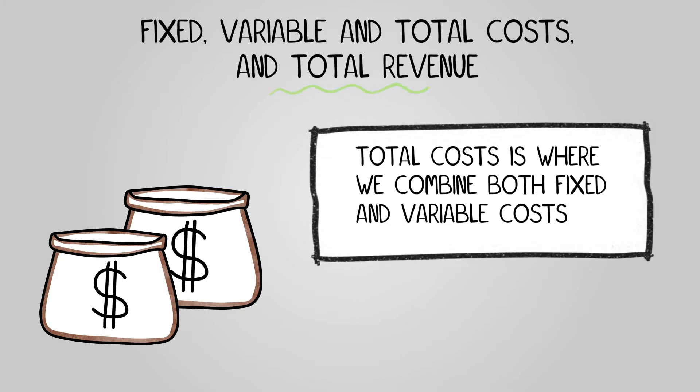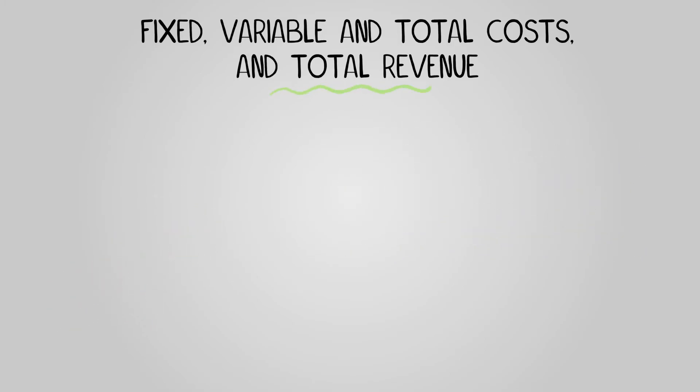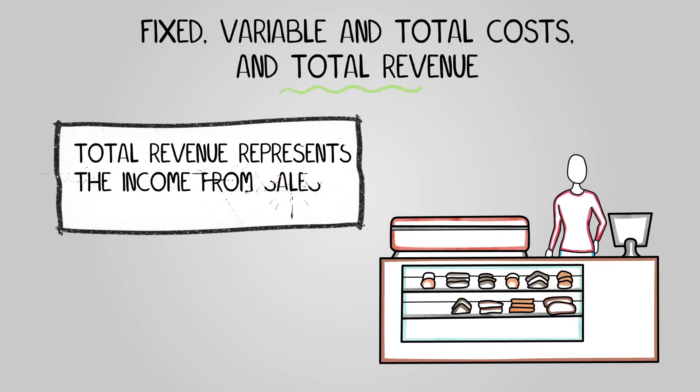On a break-even chart, the line representing variable costs starts from the point where fixed costs end, transforming into the total costs line. And total revenue represents the income from sales. It's calculated by multiplying the number of units sold by the price of each unit.